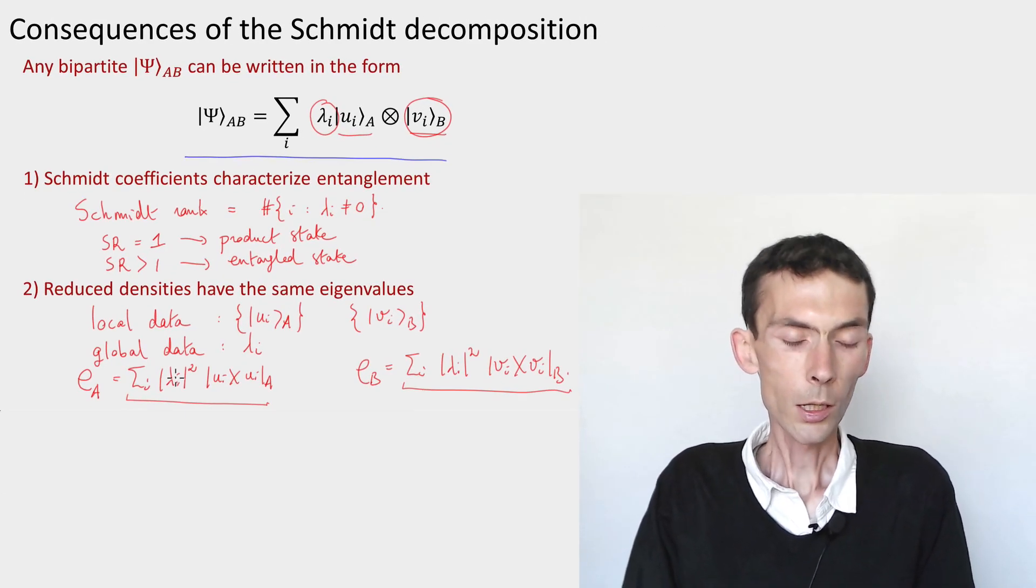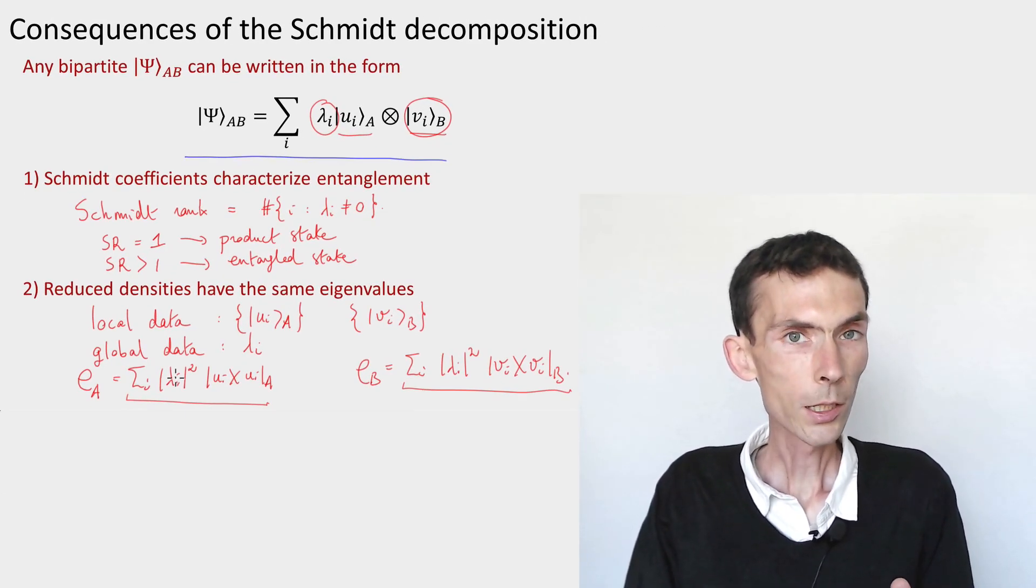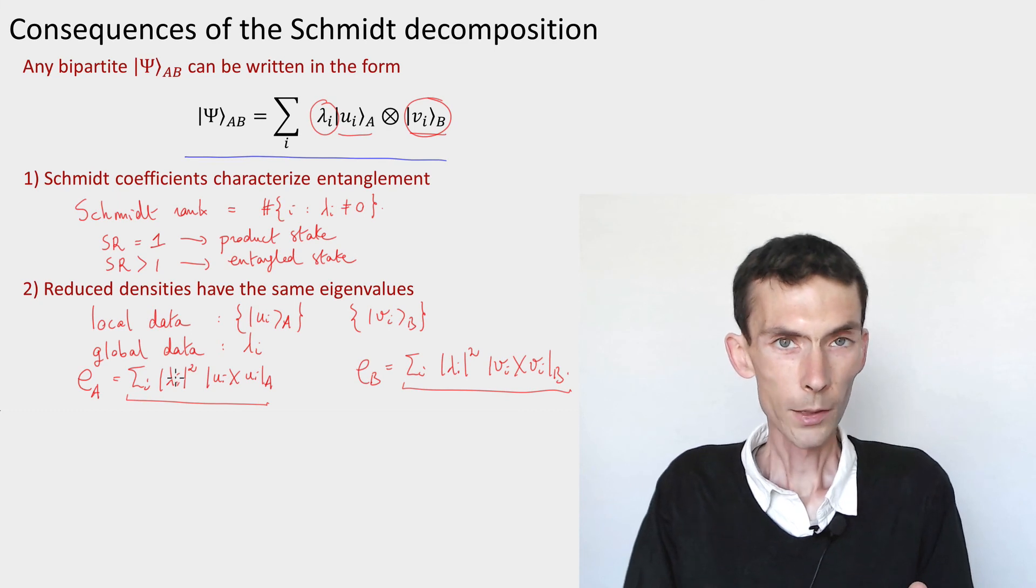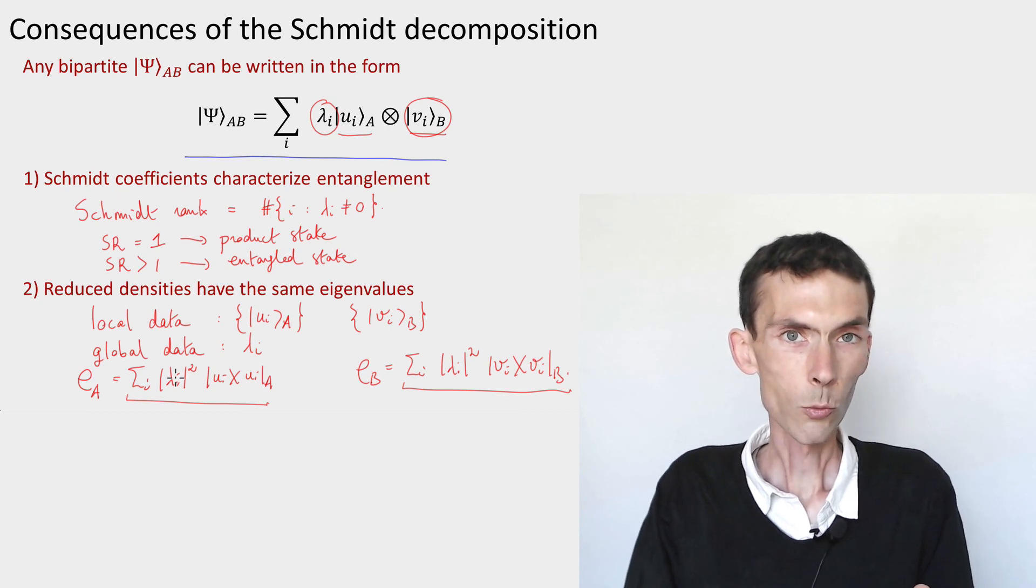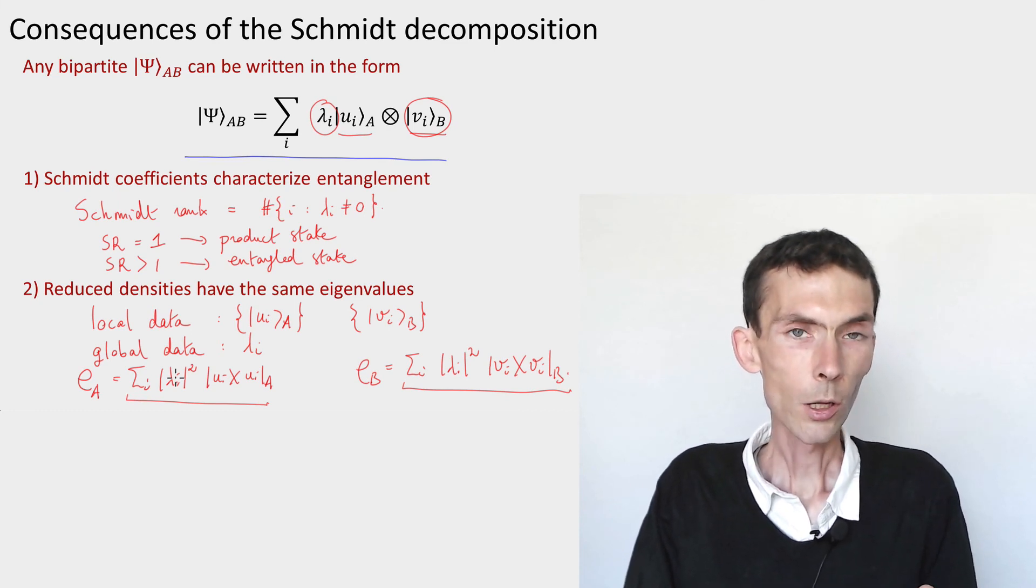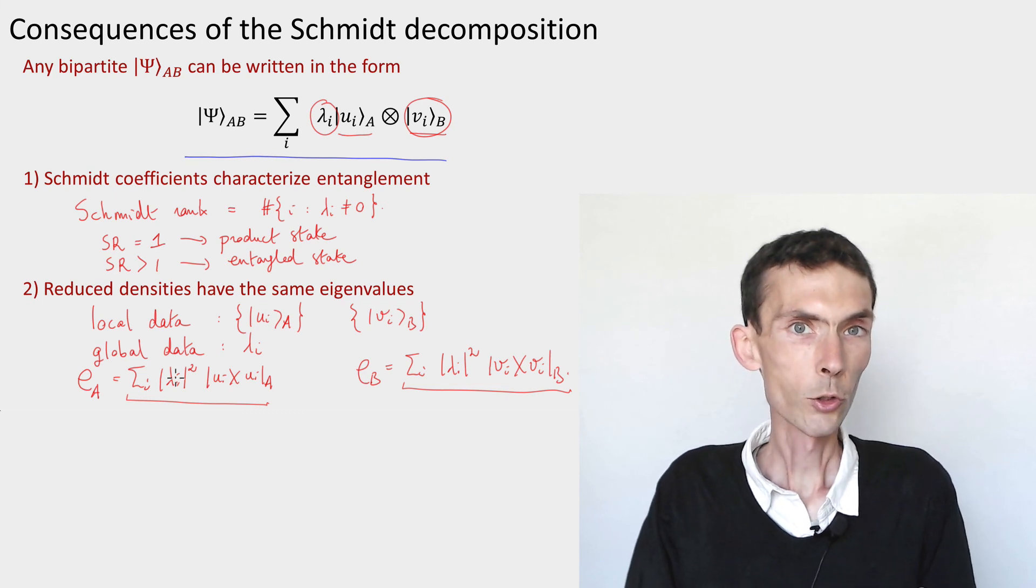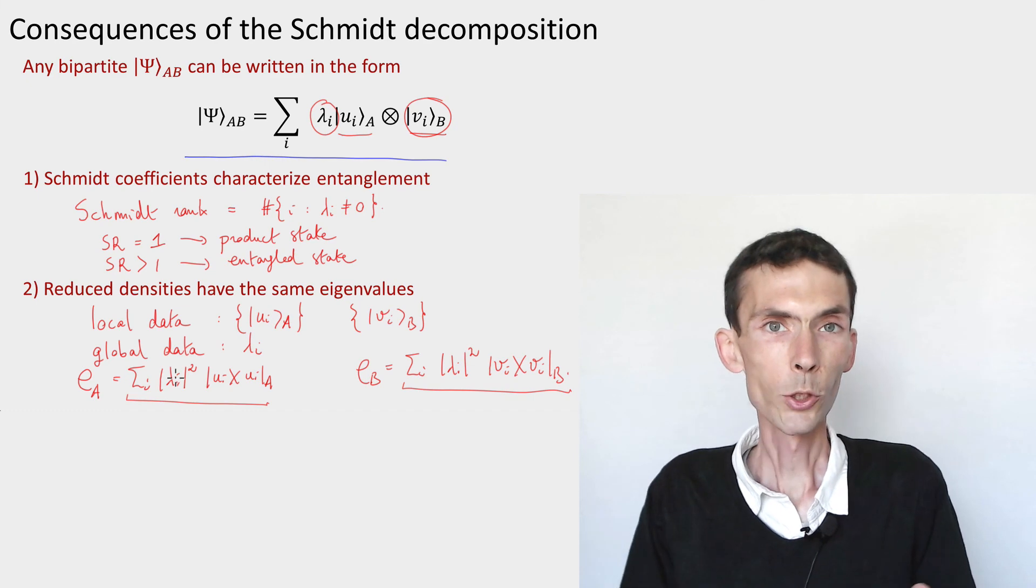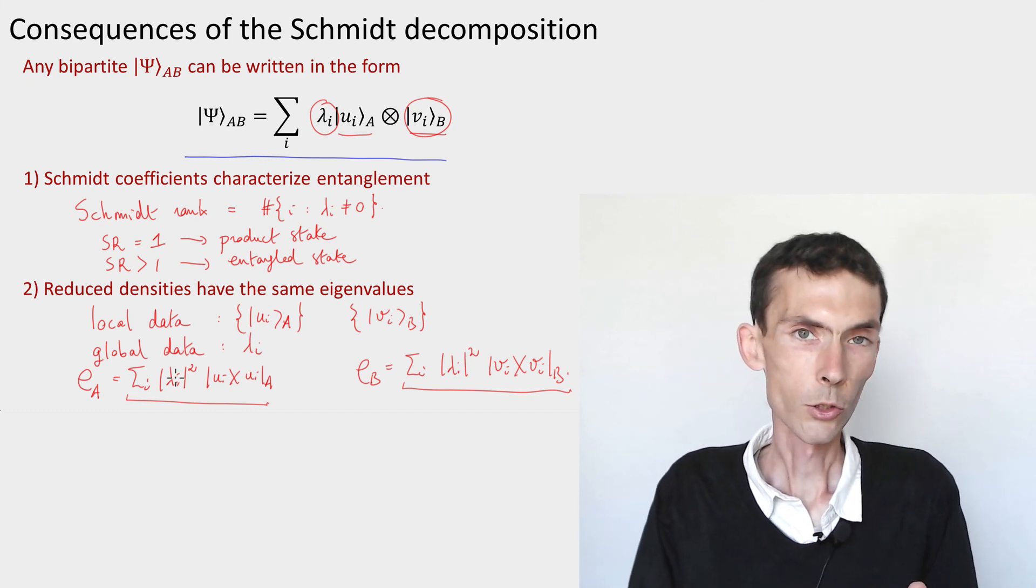This gives us a procedure that, given any pure state, given in a complicated form, lets us compute its Schmidt decomposition. We would compute the reduced density matrices, do the SVD, infer the Schmidt basis for A and B, and as well as the Schmidt coefficients, and put them together to get the Schmidt decomposition of our state.